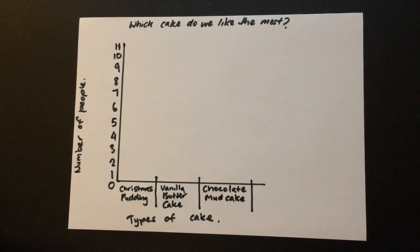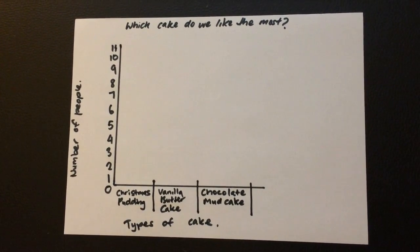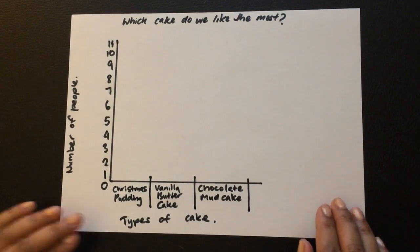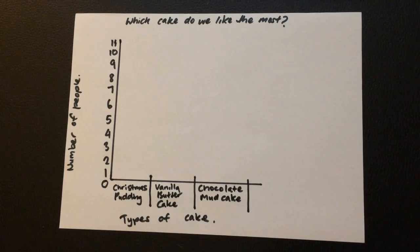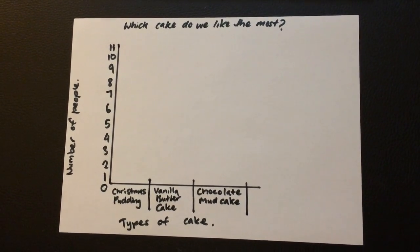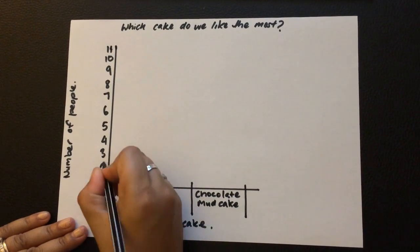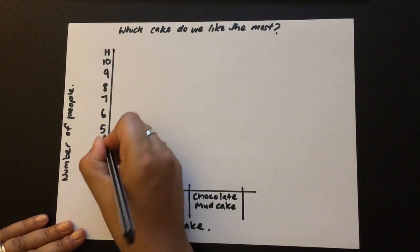So now what we need to do is first is the Christmas pudding. We have nine Christmas pudding, so what I need to do, or this is what we should have done earlier, let's put a little dot just so we know where to go.